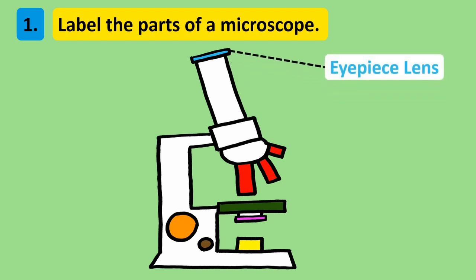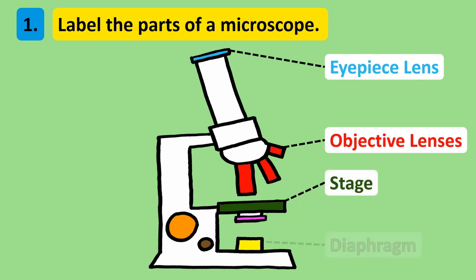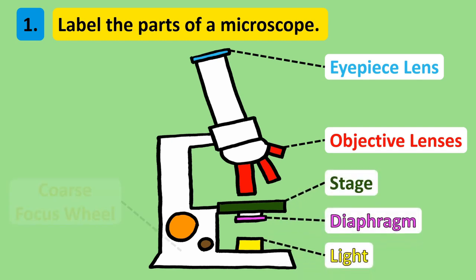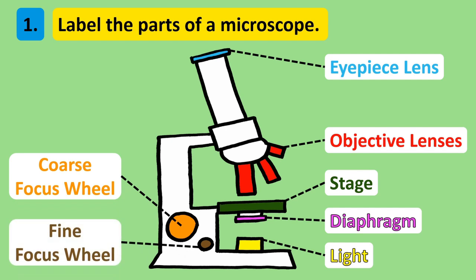At the top in blue is the eyepiece lens. In red are the three objective lenses, then the stage, diaphragm, light, coarse focus wheel and fine focus wheel.